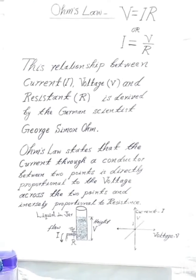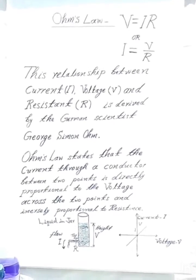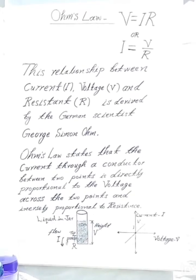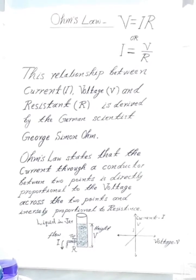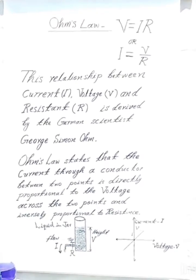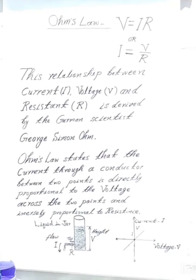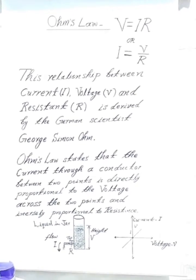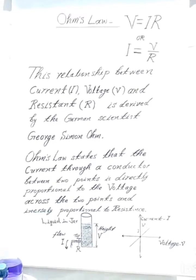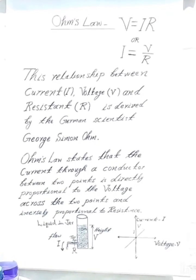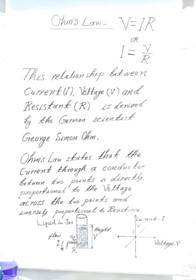When the water height is very high, the flow of water is high. This is one example showing that current is directly proportional to voltage. If we open the tap fully, the water flow increases.